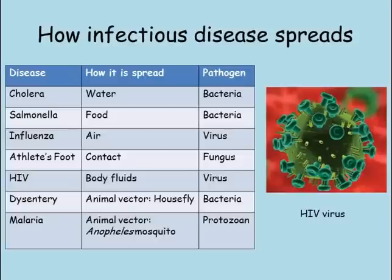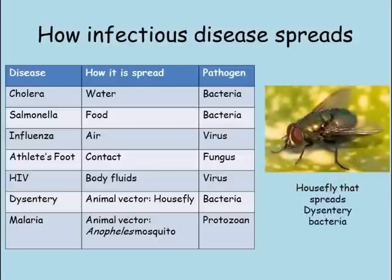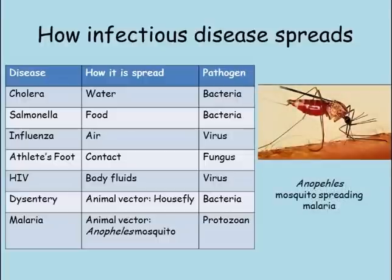Finally, diseases can spread using animal vectors. Dysentery is caused by a bacterium spread by house flies, while malaria is caused by a protozoa carried by the Anopheles mosquito. These vectors do not suffer from the disease themselves, but they are able to carry the pathogen from someone who has the disease to a healthy person, and so the disease spreads.